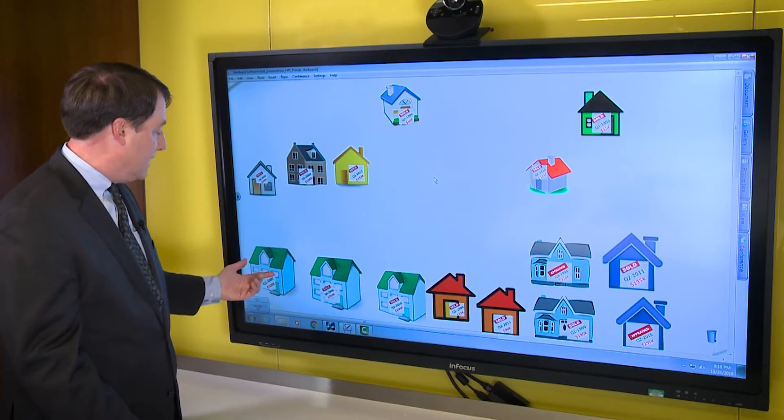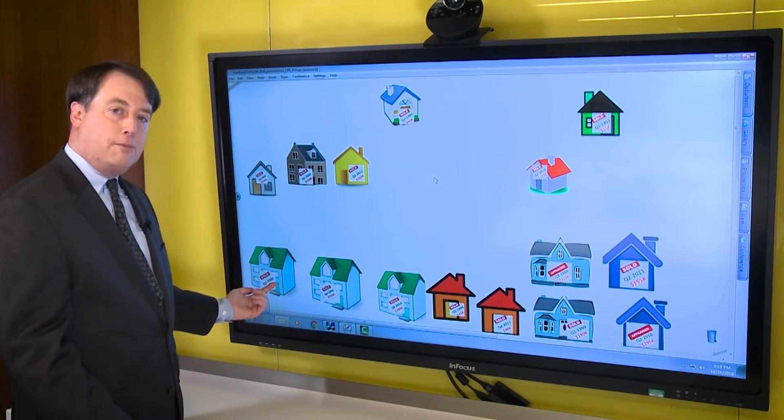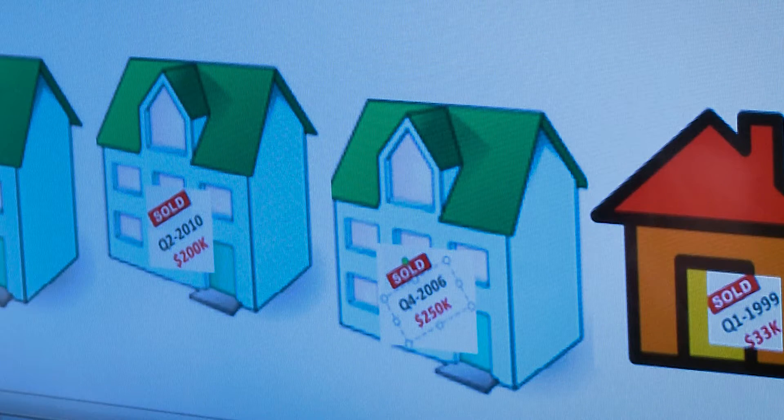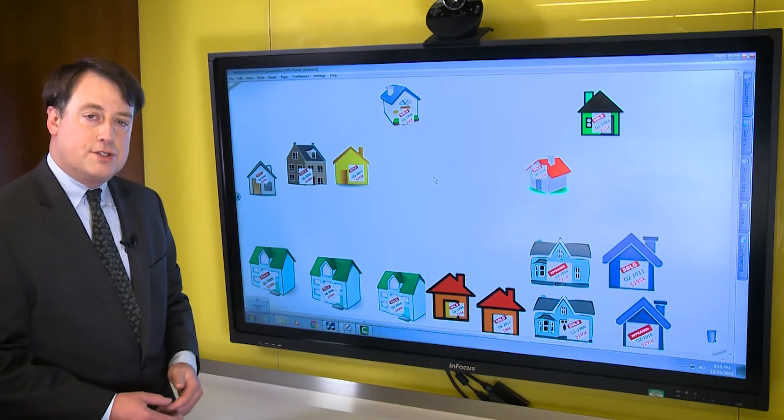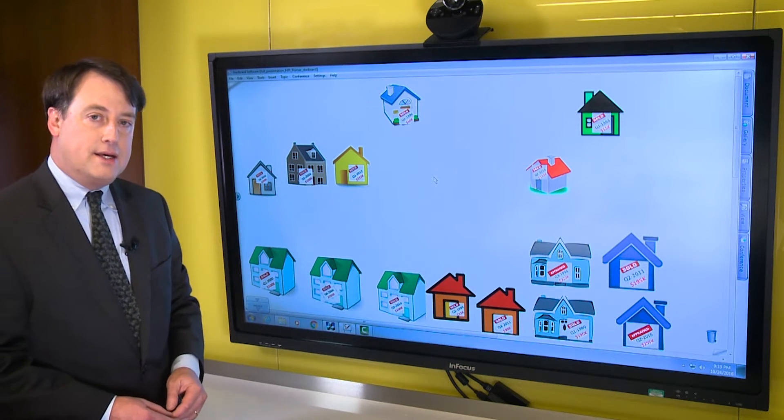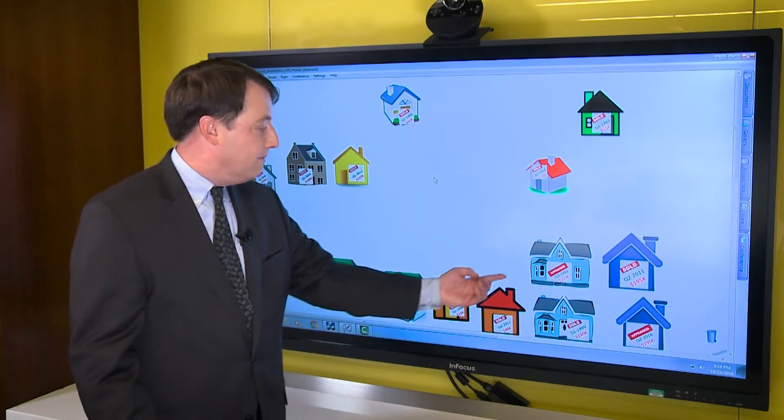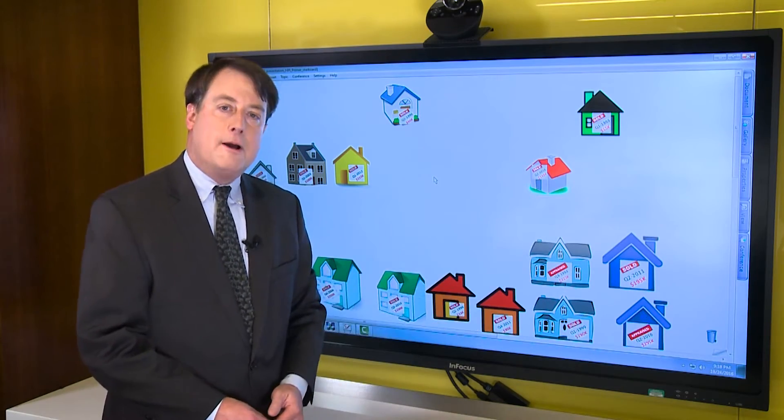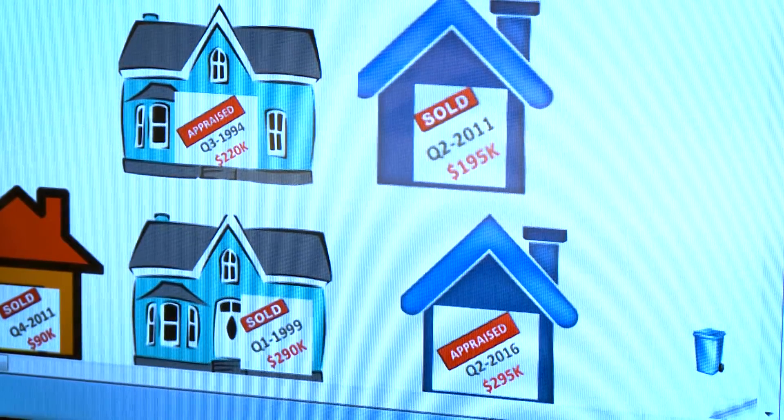In the case of our purchase-only indexes, we are looking for properties which have sold multiple times. In other situations, where our indexes incorporate appraisal data, we simply need to see multiple values for the same property, whether they be sales prices or appraisal values.